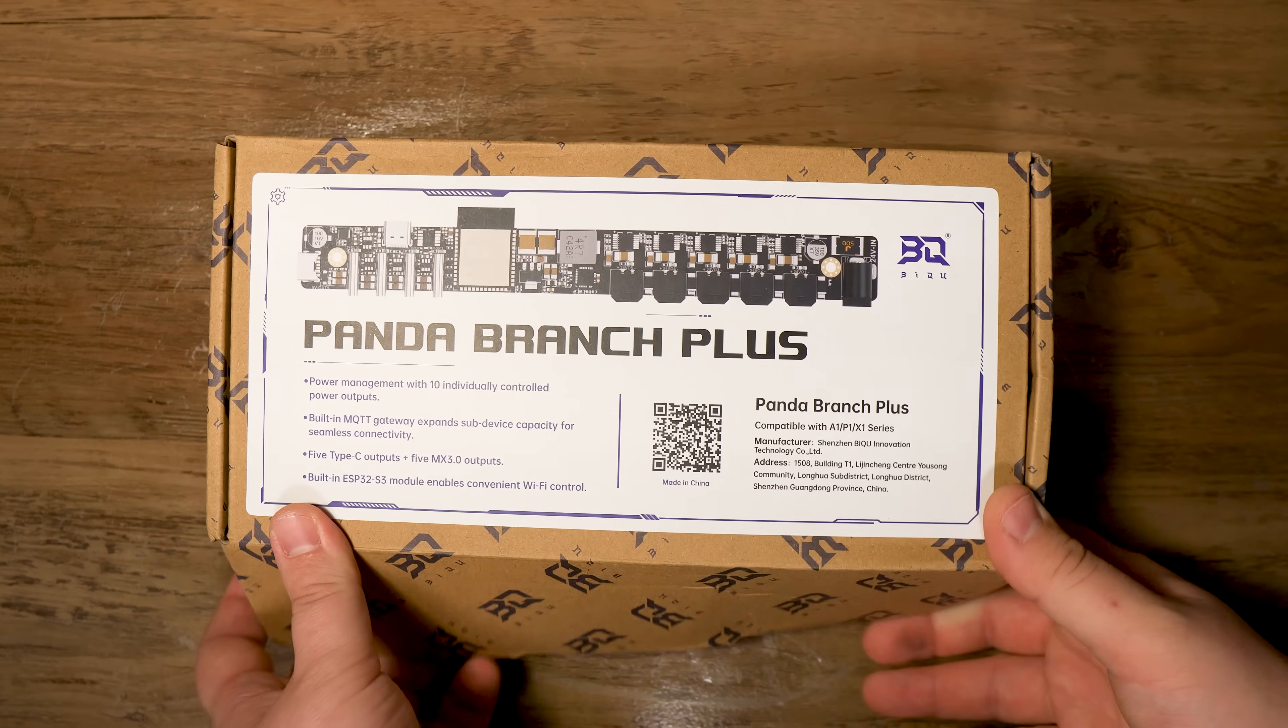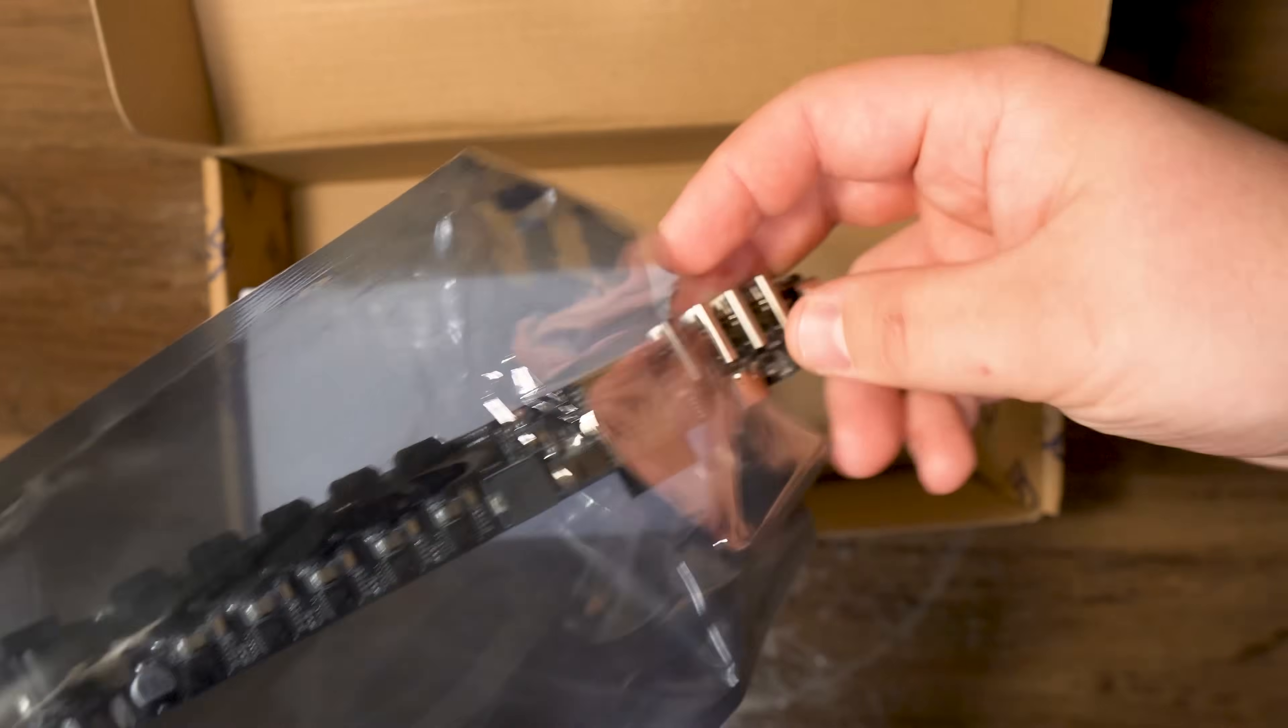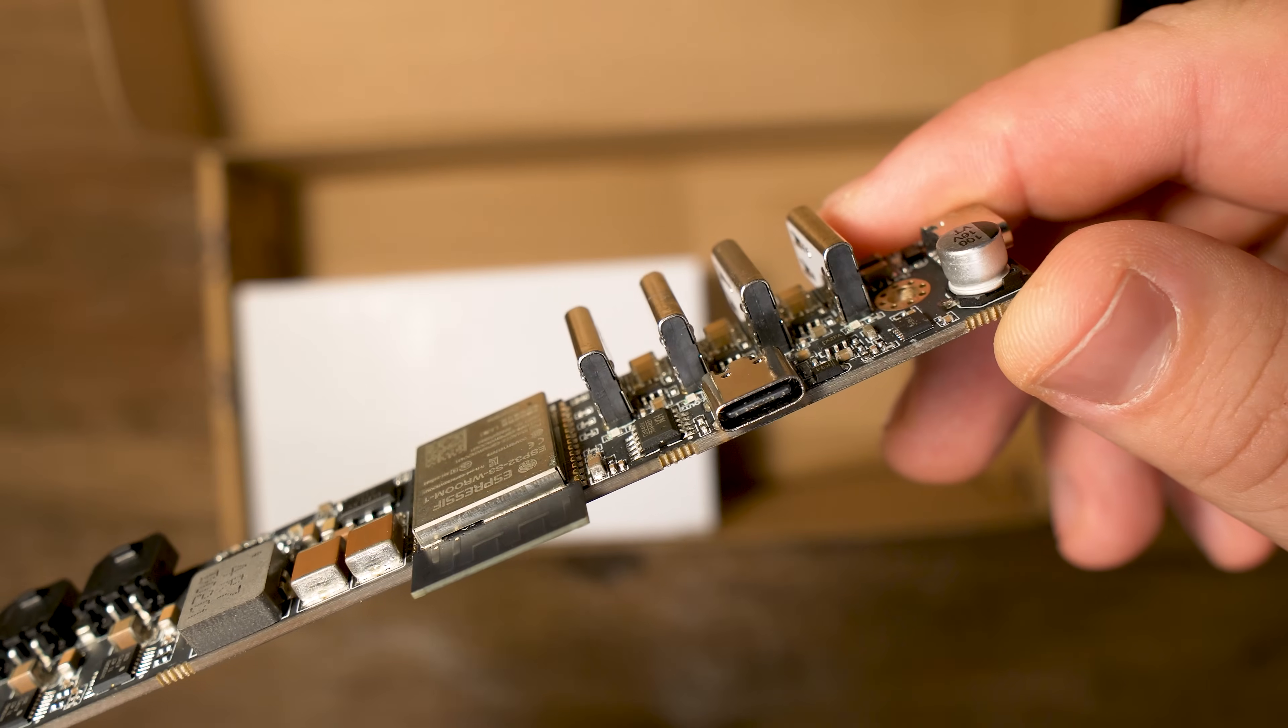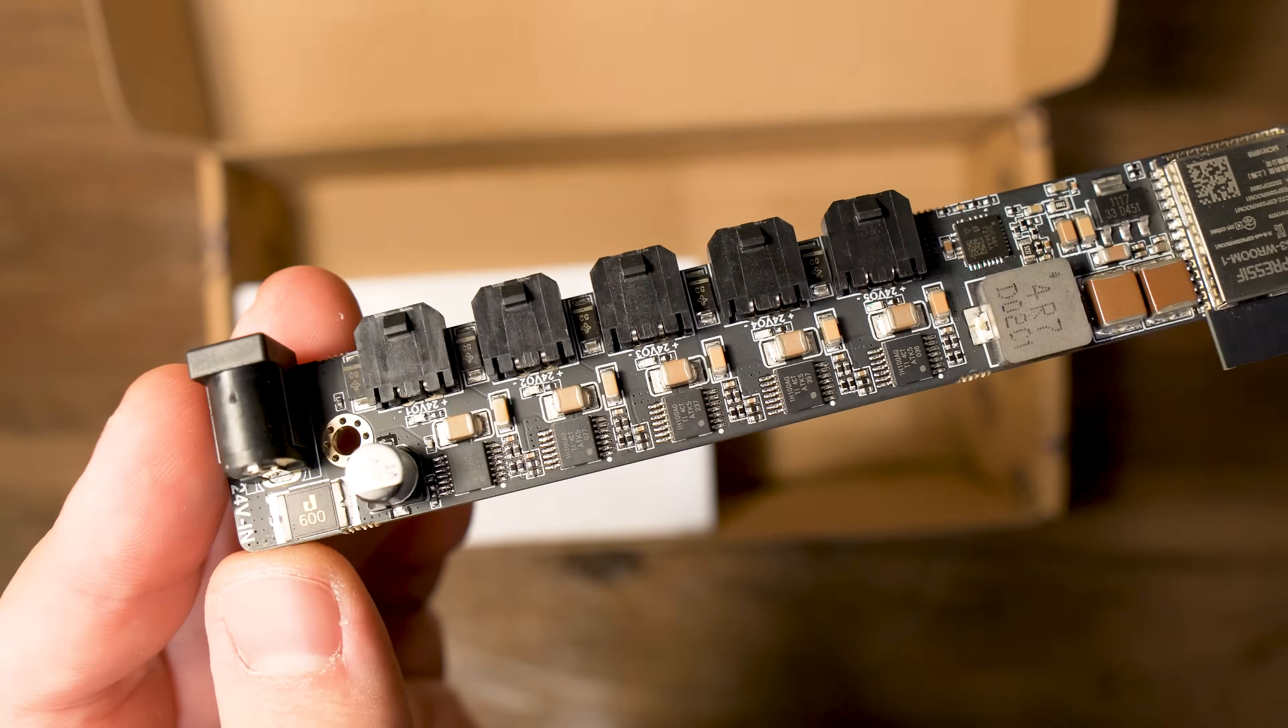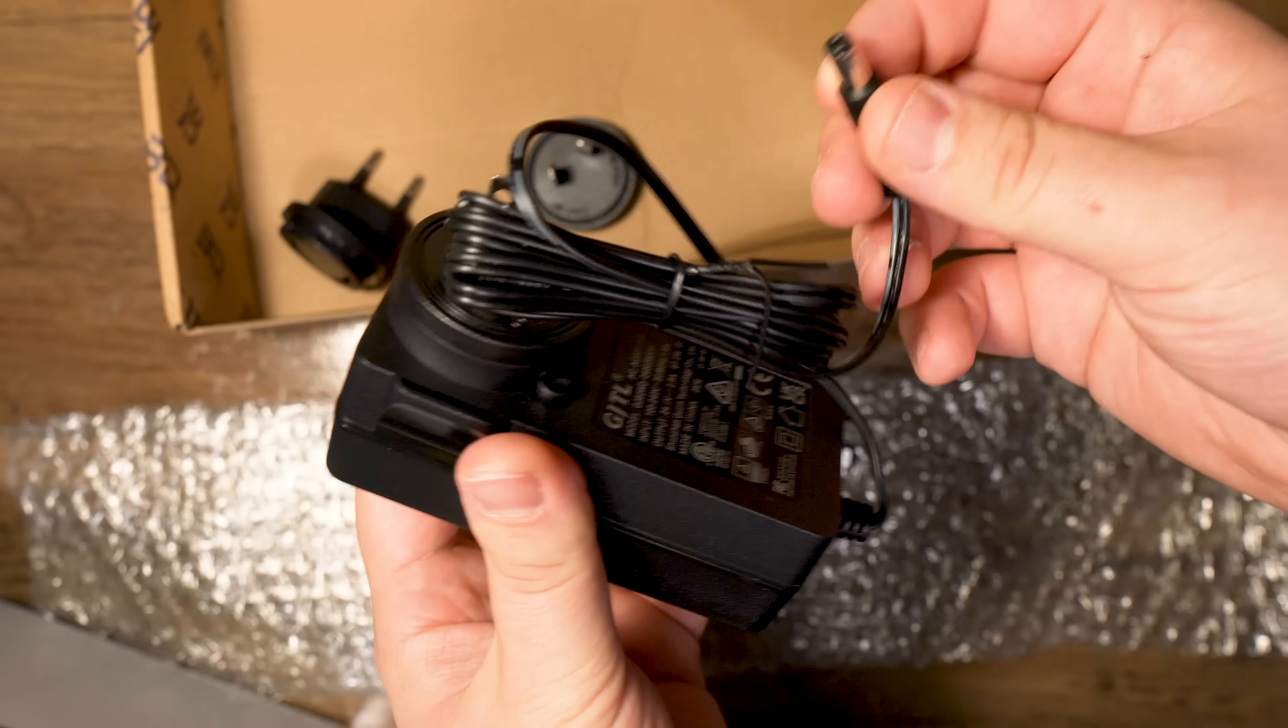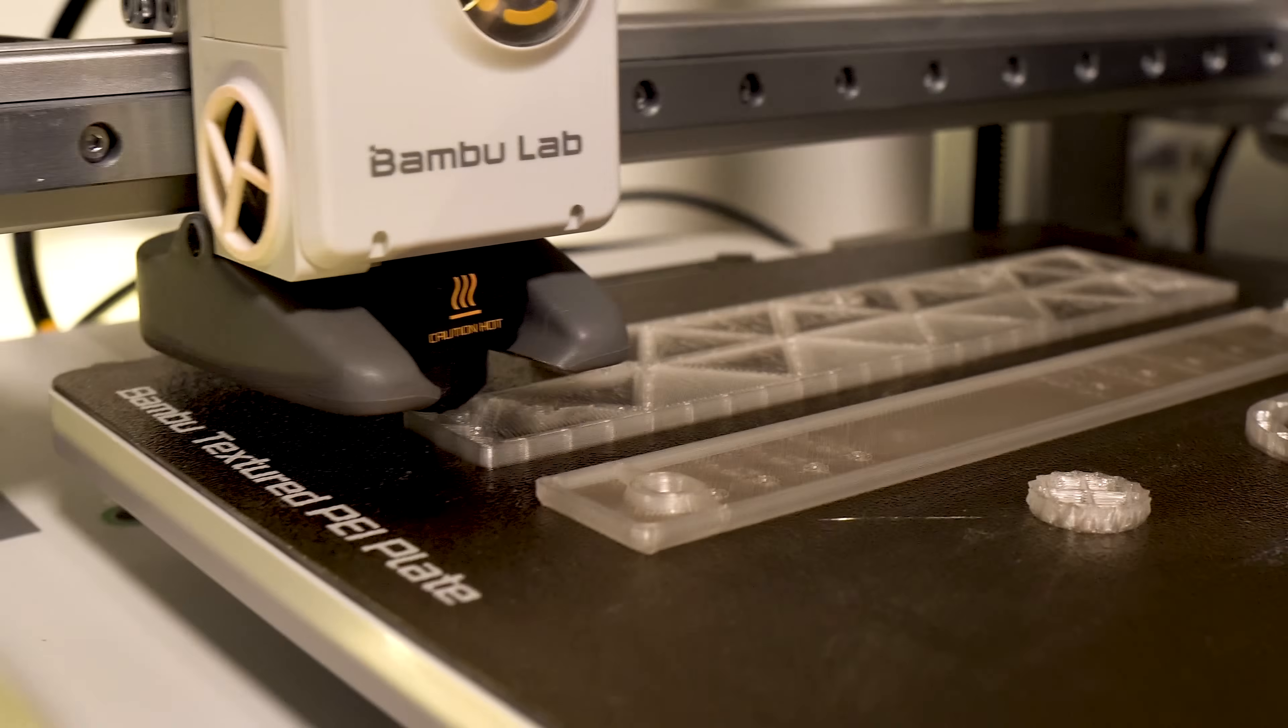At number 3, we have a Panda Branch Plus, which is an all-in-one power management hub that comes with 10 independent switchable channels that include 5 3mm microfit connectors and 5 type-C USB ports, all powered by a 24V adapter. Each channel can be controlled via a web UI, similar to the one from the cooler fan. BigQ hasn't included a case for this board, but you could print one from the link down in the description.